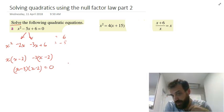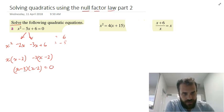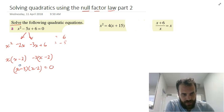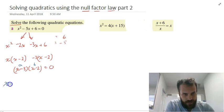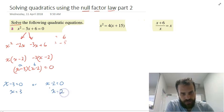I've gone through that really quickly because you should know how to factorize by now. Now we can use our Null Factor Law because x minus 3 times x minus 2 equals 0. Here's our a, here's our b — a times b equals 0. Therefore, either x minus 3 equals 0 or x minus 2 equals 0, meaning x equals 3 or x equals 2. Two answers — always get two answers.